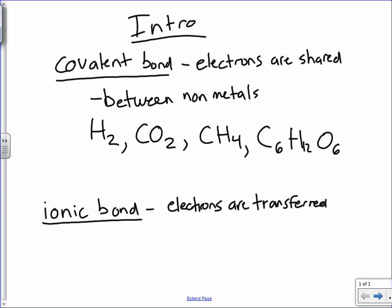Okay? The other type, ionic bonds. These happen between metals and non-metals. Okay? This is where the metals are going to form cations, positive ions, and the non-metals are going to form anions or negative ions, and then they're going to bond together.